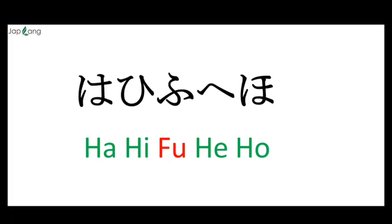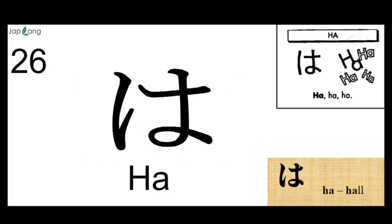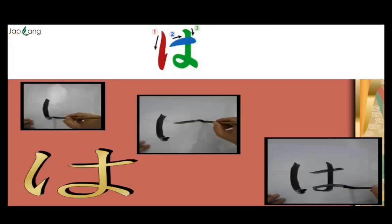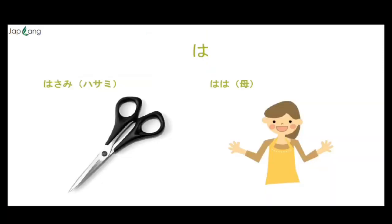I am marking in red color. This is HA. Just refer to the picture given on the right-hand side. HA, and the sound given below in brown color is HA, as in HAL. This is how we write HA. HA as in Hasami — that means scissors. HA also means mother — your own mother.